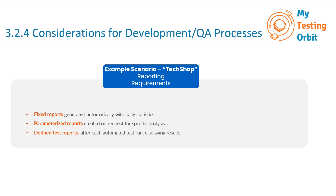The last one is defined test reports after each automated test run displaying results. After each automated test run, a defined test report is generated. It presents test results in a standardized format, showing pass or fail status for each test case, detailed error messages, and performance metrics.